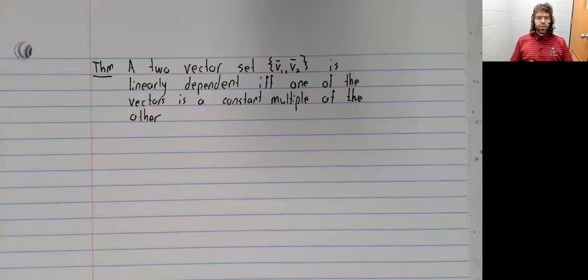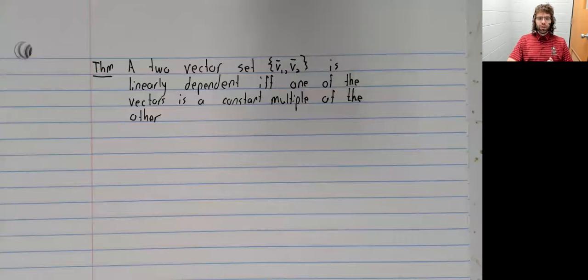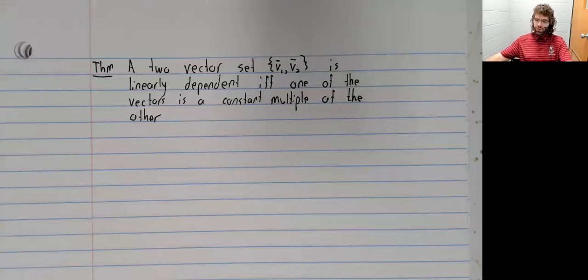Theorem. If we have a two-vector set, that set is linearly dependent if and only if one of the vectors in the set is a constant multiple of the other vector.